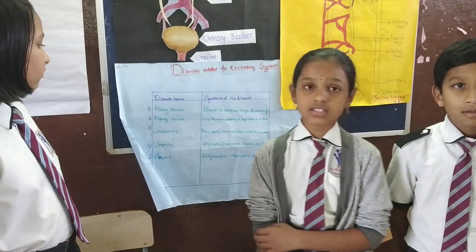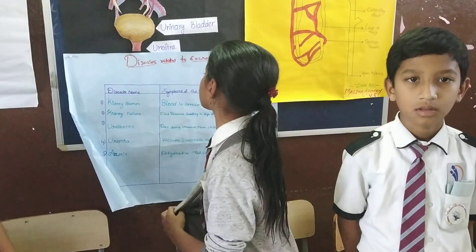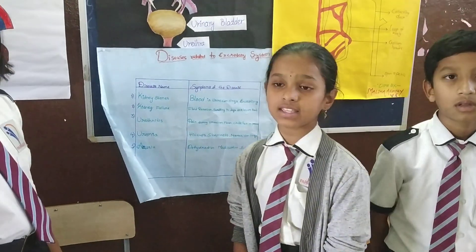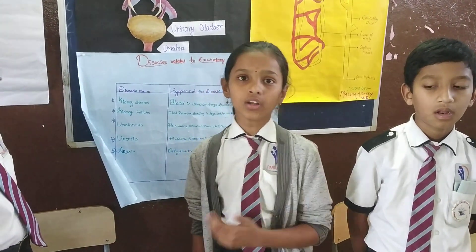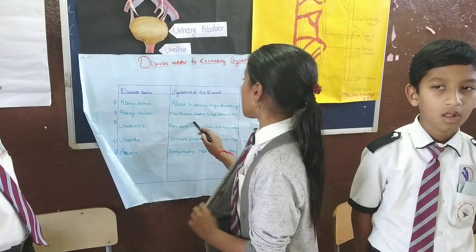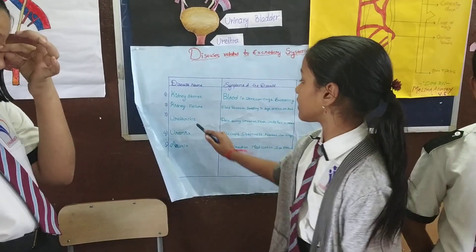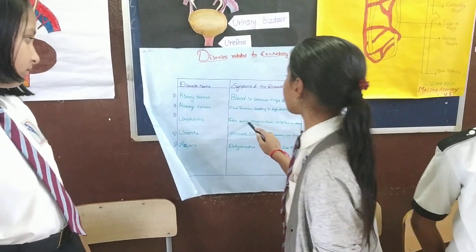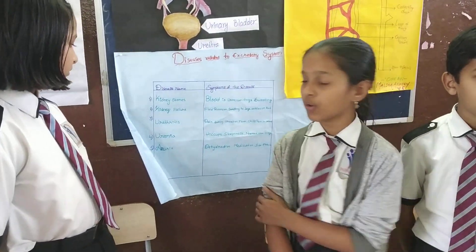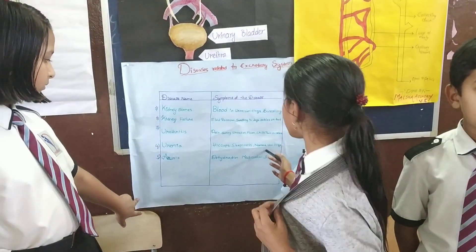Sweating is one of the most common conditions affecting the body. Fluid retention means the fluid is not being expelled from the body properly. Because of that, we get swelling in the legs, muscles, and feet. Another condition involves pain during urination, fever, and pelvic pain.